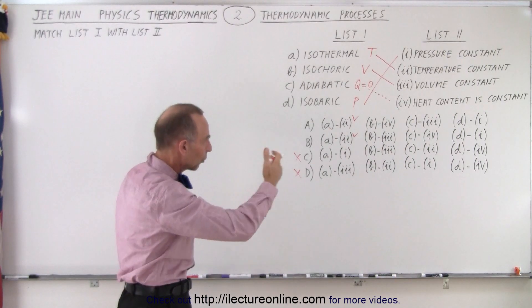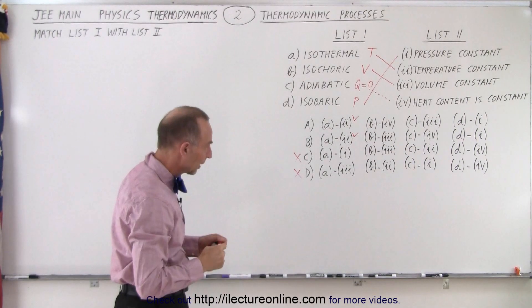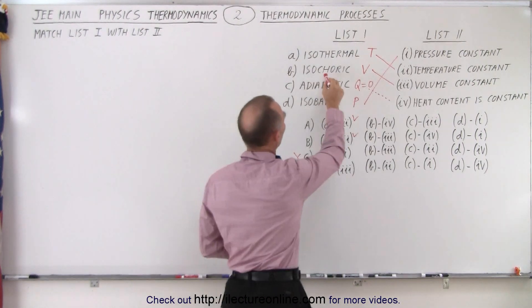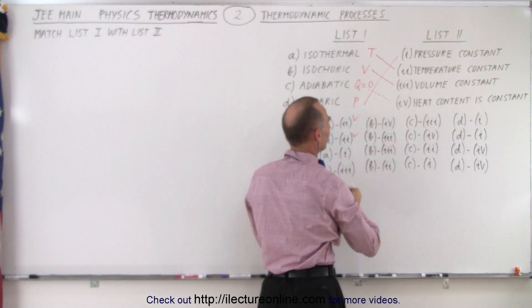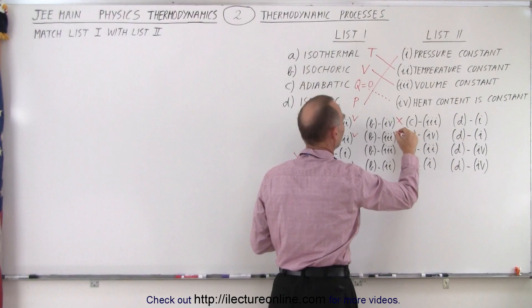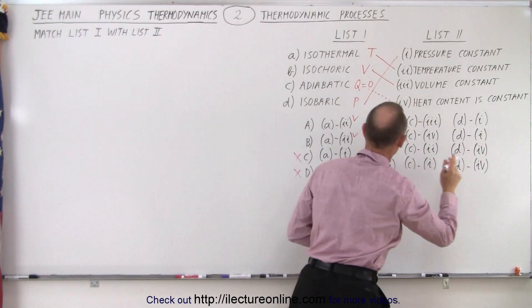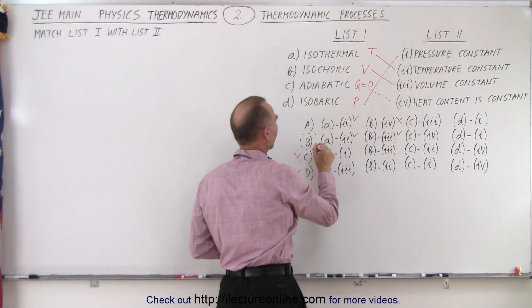We don't have to go through every one of them. We can just go one at a time and eliminate things. How about for B, isochoric, volume remains constant, which matches three. So this is four, this is three, so we know that this is incorrect. This is correct, and we don't have to go any further. We know now that B is the correct answer.